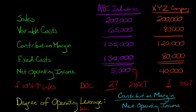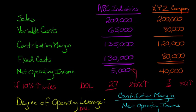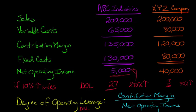You might ask why, if we change the percentage of sales for each company by the same amount, would profitability be affected differently. The idea behind Degree of Operating Leverage is that when a firm is closer to its break-even point and sales increase, that has a bigger effect on net operating income. ABC Industries is very close to breaking even — they only have $5,000 in net operating income — whereas XYZ company has $40,000 in profit, so ABC is a lot closer to the break-even point.